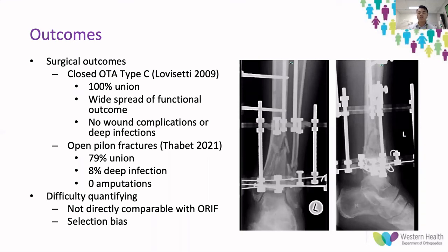It is difficult to quantify outcomes comparing external fixation to internal fixation, given the success of the staged approach with locking plates. Most would probably choose internal fixation — there are two distinct groups: those better treated with ORIF and those better treated with an x-fix. These are almost completely different groups of patients — apples and oranges — and there is an inherent selection bias in the literature, as patients receiving external fixators often have more complex fractures, terrible injuries not amenable to fixation, or open injuries.